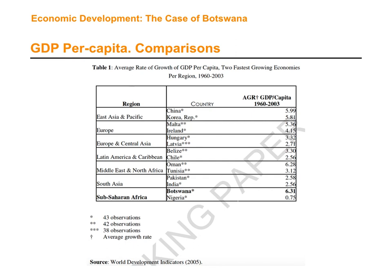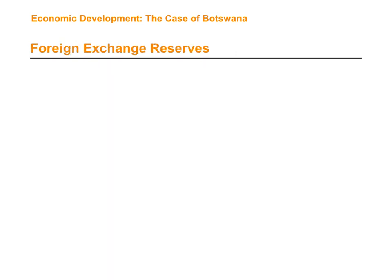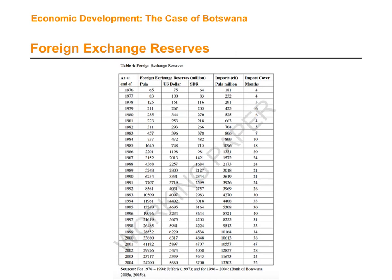Botswana is a landlocked country surrounded by other countries with no direct access to the sea. On top of that, Botswana used to be very poor in the 1950s — a country with a handful of kilometers of roads and a handful of university graduates. A substantial part of the country contains the Kalahari Desert, which does not help agriculture. It is a very interesting result that a country with those characteristics achieved the highest rate of economic growth per capita in the world.